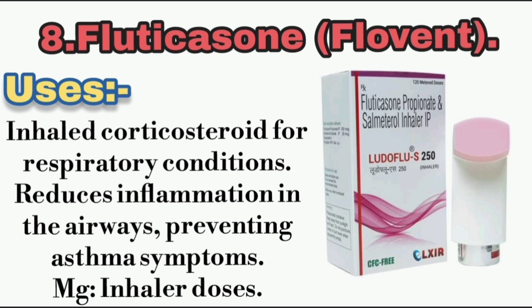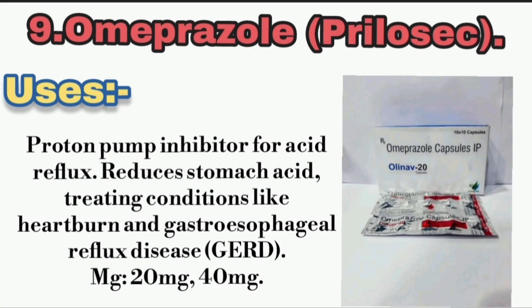8. Fluticasone (Flovent) — Use: Inhaled corticosteroid for respiratory conditions. Reduces inflammation in the airways, preventing asthma symptoms. Available mg: Inhaler doses.